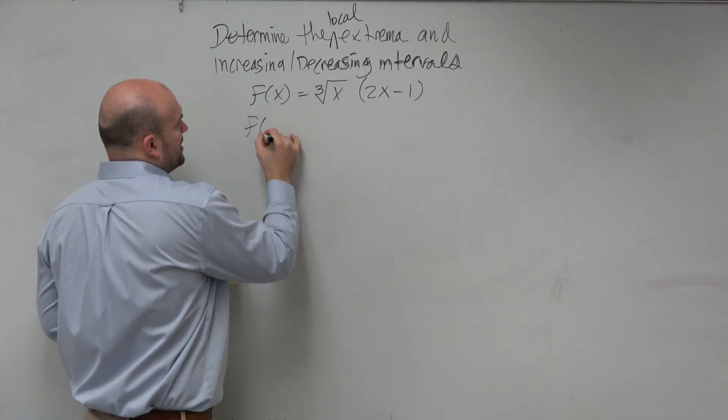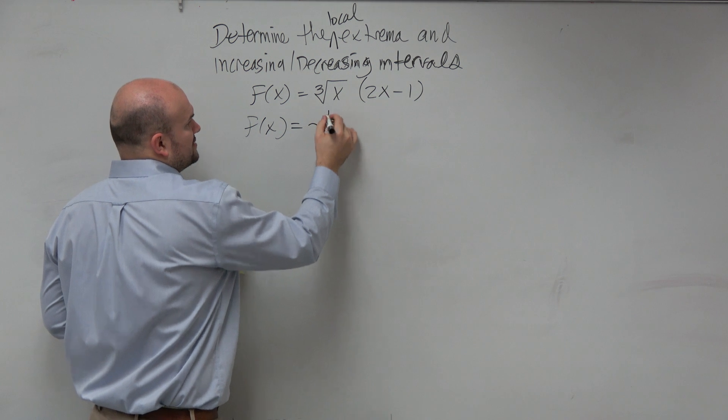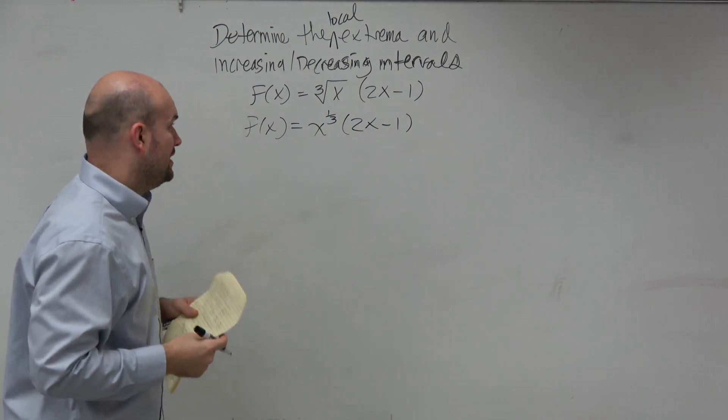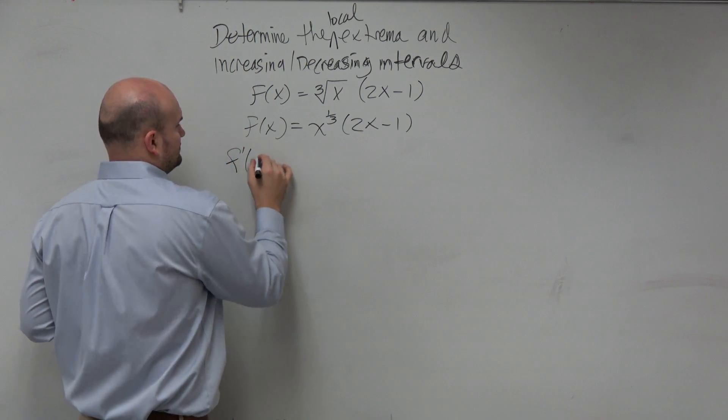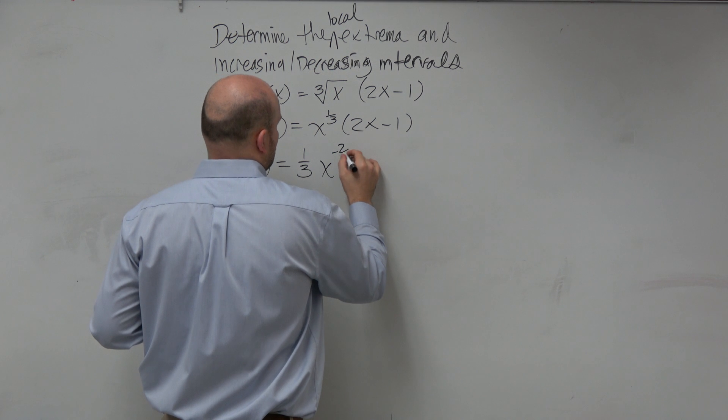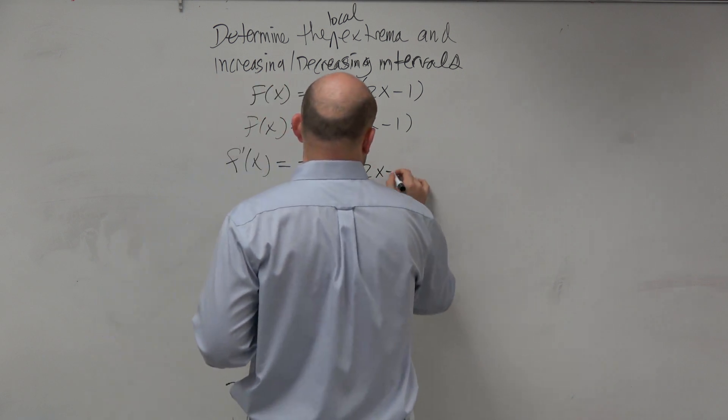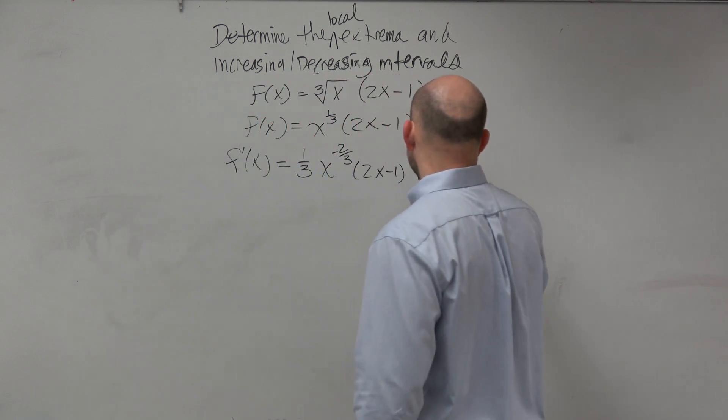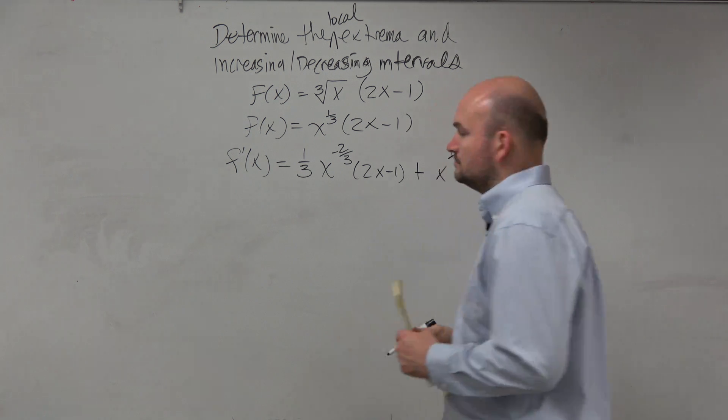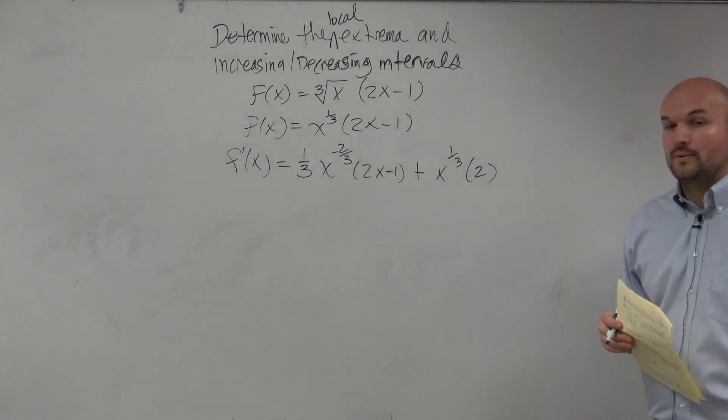So if we're going to use the product rule, we can do f(x) = x^(1/3) times (2x - 1). So f'(x) is going to be (1/3) times x^(-2/3) times (2x - 1) plus x^(1/3) times 2. Cool?